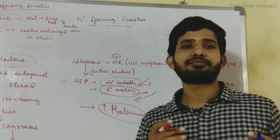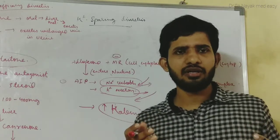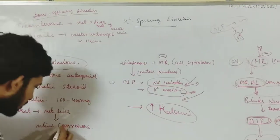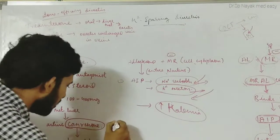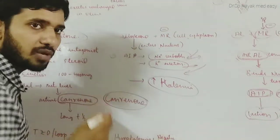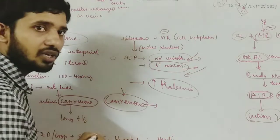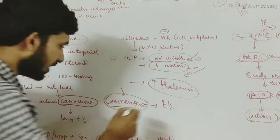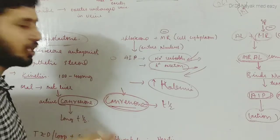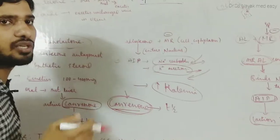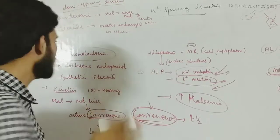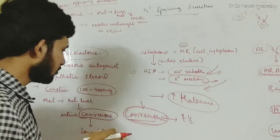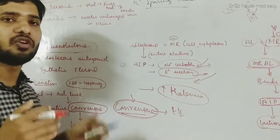Regarding the pharmacokinetics of spironolactone: it is well absorbed from the GI tract. It is a synthetic steroid metabolized in the liver — specifically, spironolactone is metabolized to canrenone. This metabolic product canrenone is also an active form and has a high plasma half-life, giving spironolactone a duration of action of about 24 hours. The dose is given once daily, typically 100 to 400 mg orally. After metabolism, it is excreted through urine.